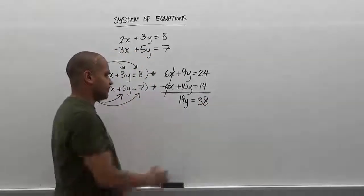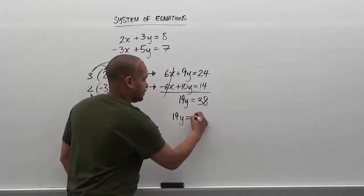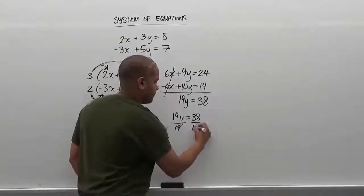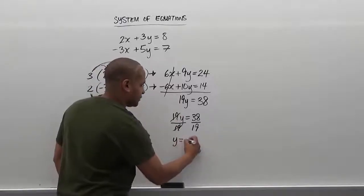Now we can take this and solve using the multiplicative inverse which is division to both sides. So we're going to divide both sides by 19. These two 19s reduce to 1, and we're left with y is equivalent to 2.